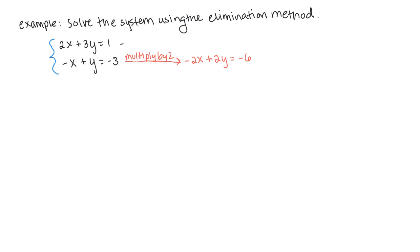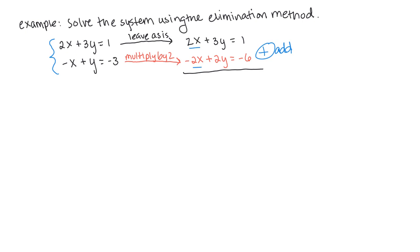Leaving the top equation as is — 2x plus 3y equals 1 — when we add the two equations vertically, 2x and negative 2x cancel to zero, 3y and 2y make 5y, and negative 6 plus 1 gives negative 5. So 5y equals negative 5, meaning y equals negative 1. By multiplying the bottom equation by 2, we designed it so one variable cancels out, leaving a single-variable equation we can solve.